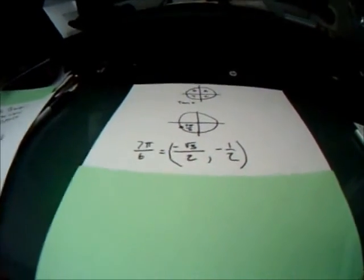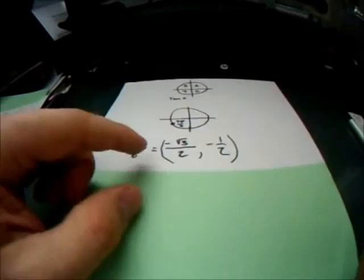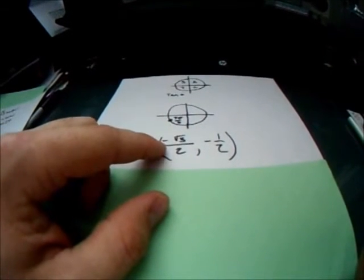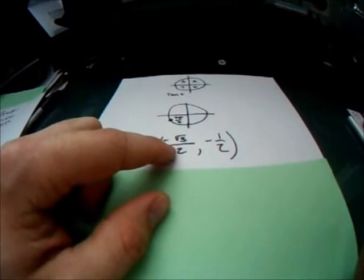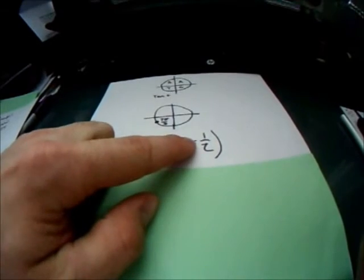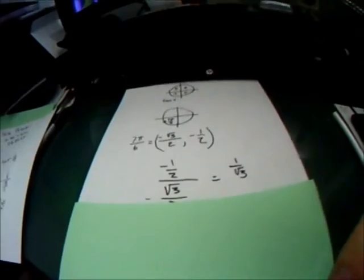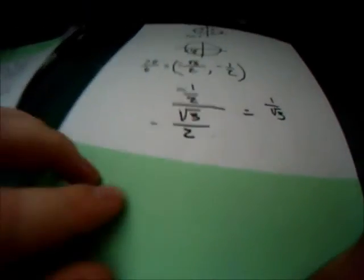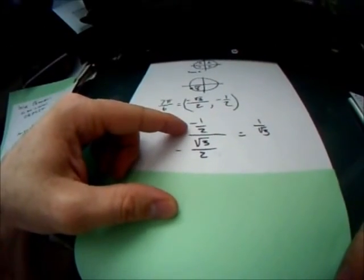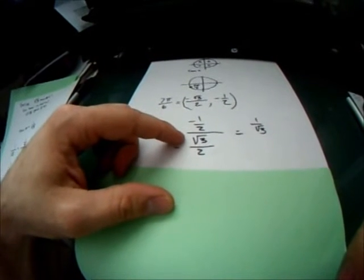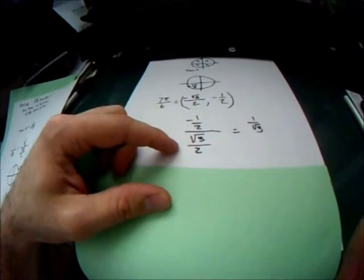Okay, now 7 pi over 6 is equal to negative square root of 3 over 2 and negative 1/2. Now put that into y over x, and that's going to give you negative 1/2 divided by negative square root of 3 over 2.